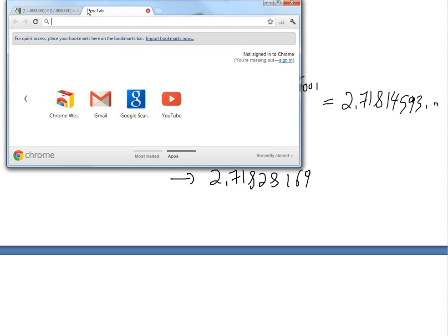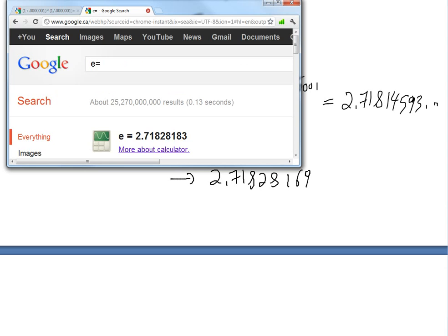And then if you were to put e inside, let's see what e is. So e is 2, so 1, 6, 9 is 1, 8, 3. So you've got to go into more decimal places and you'll get closer and closer.